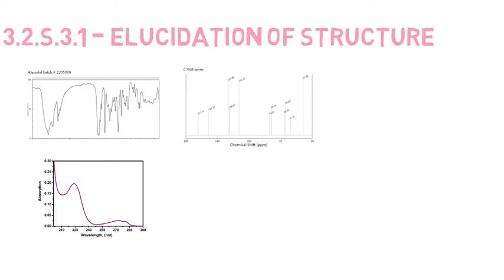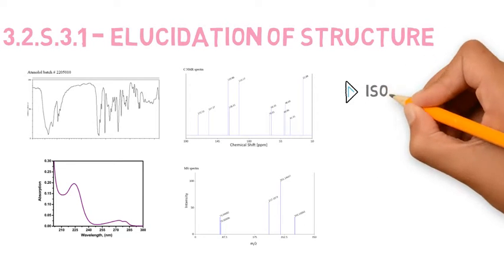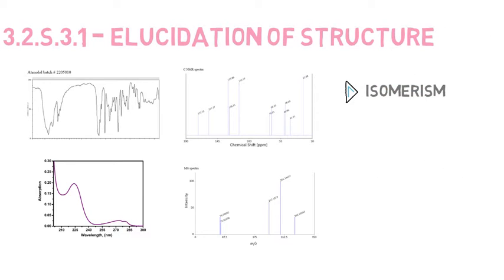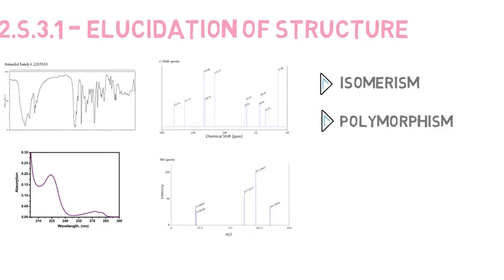such as an infrared spectrum, UV spectrum, NMR, mass spectrum, and elemental analysis. Here, we will also see a discussion about isomerism, in case this is applicable to the API, and another property which is very important,